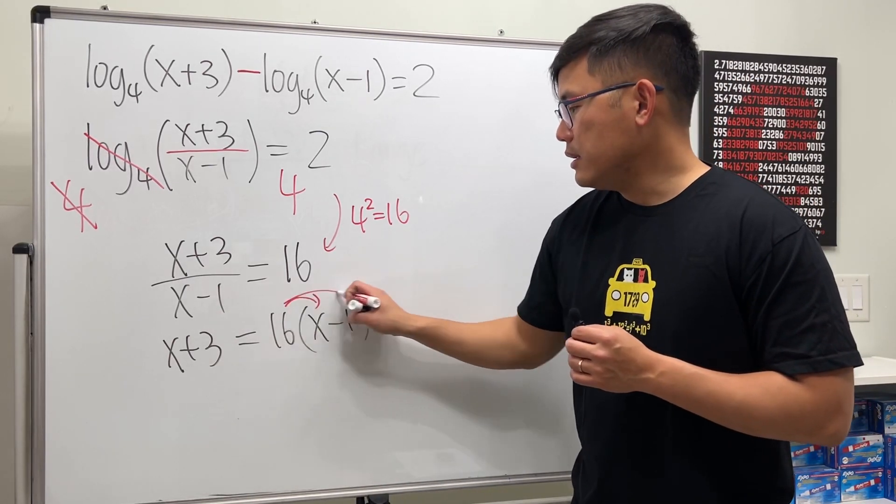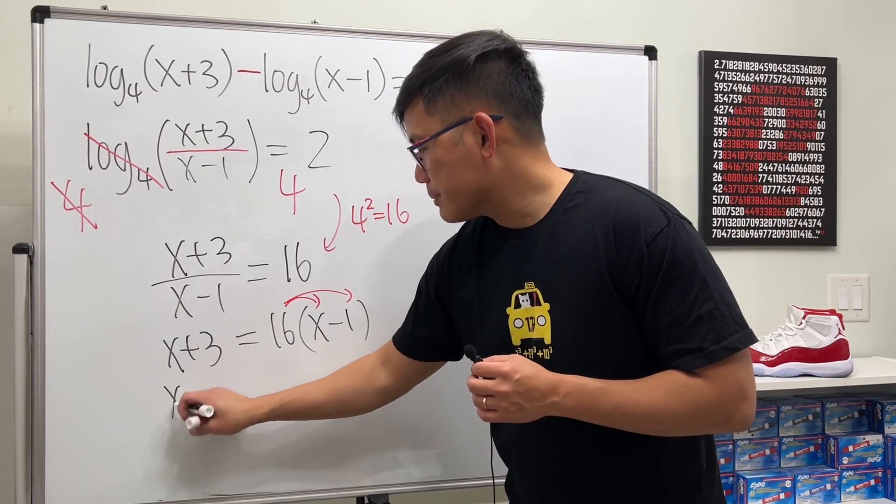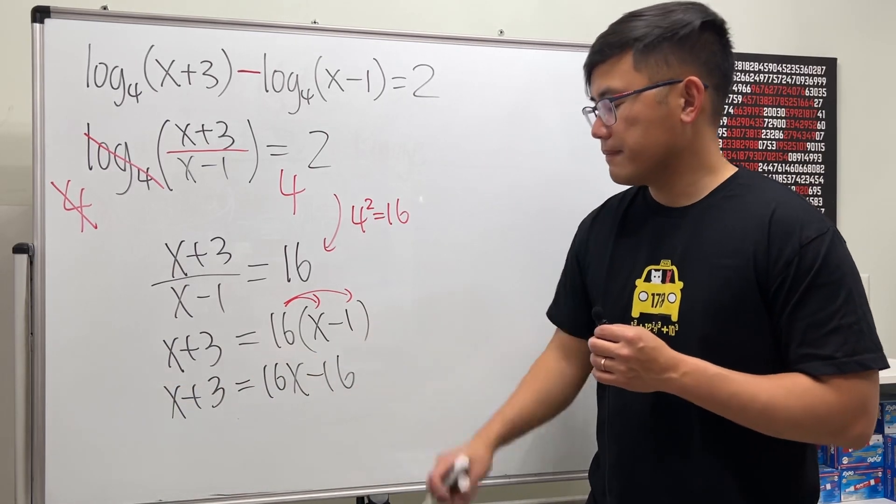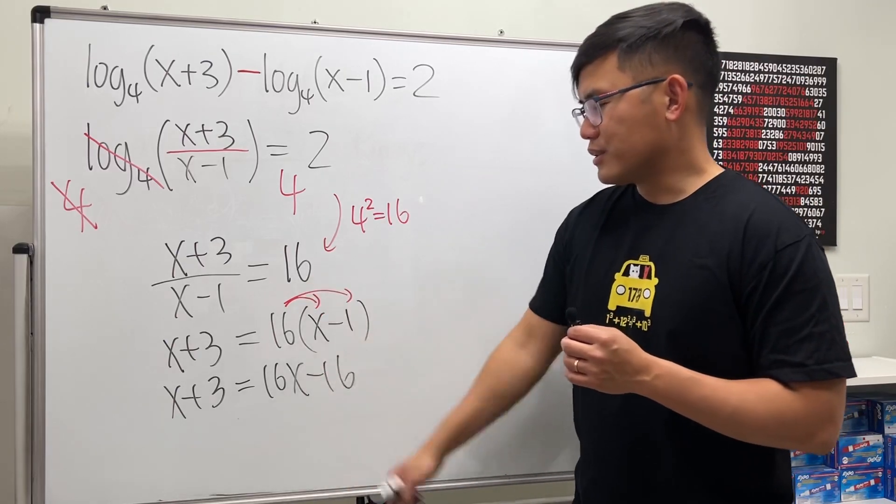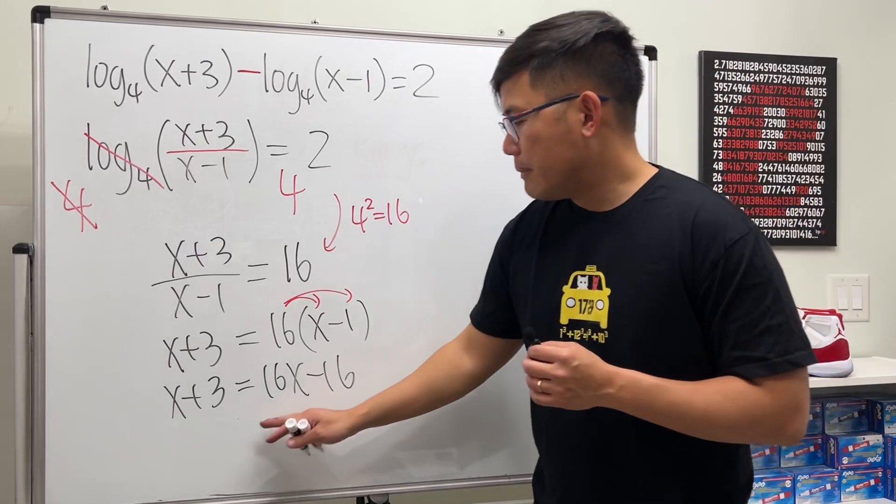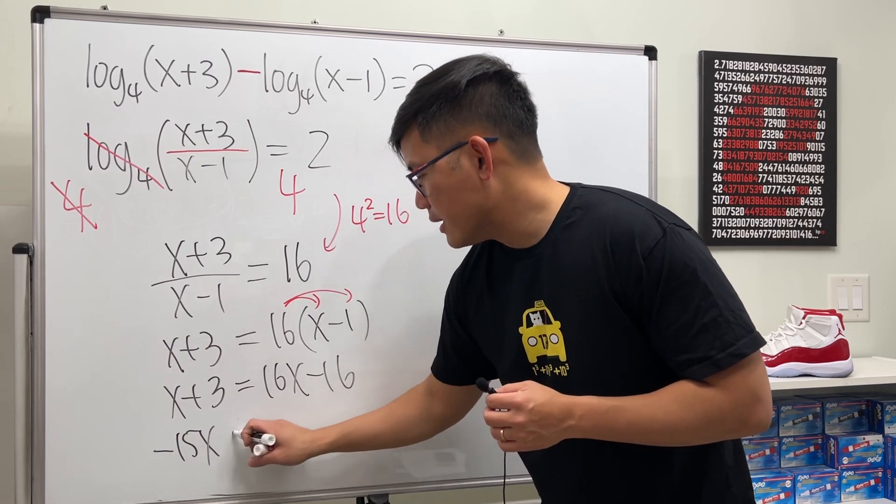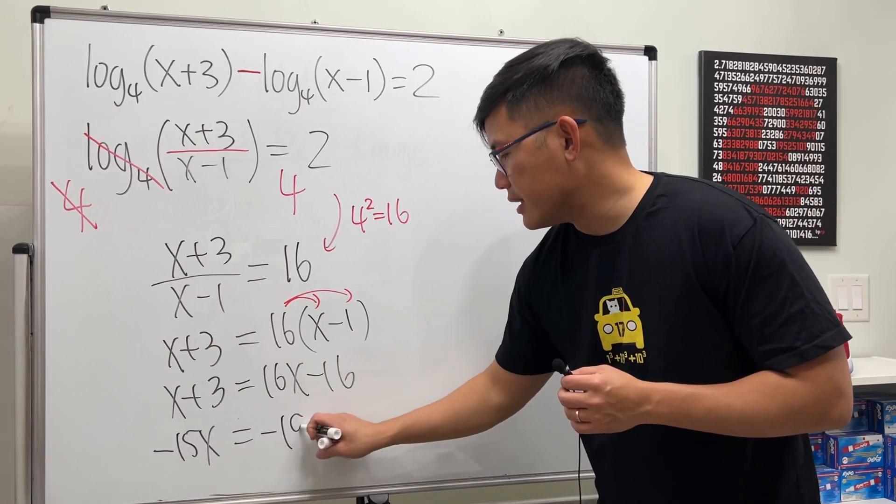Let's distribute this. We get x+3 equals 16x-16. I'll solve it whichever way you like. Minus 16 on both sides, we get -15x. Minus 3 on both sides, we get -19.